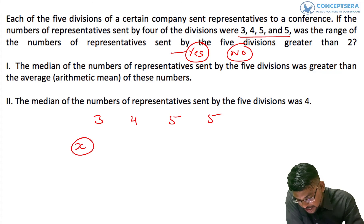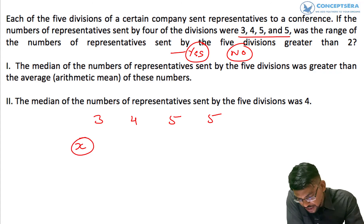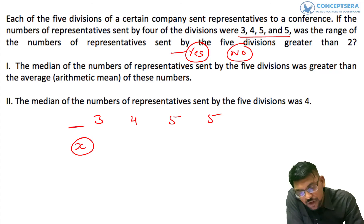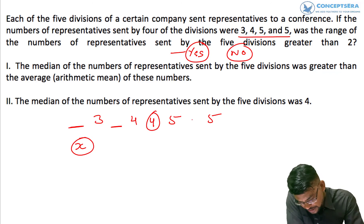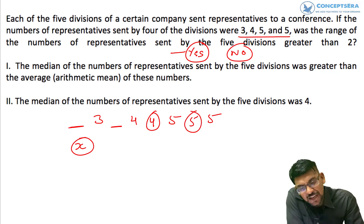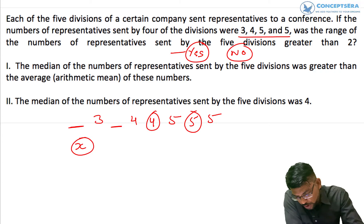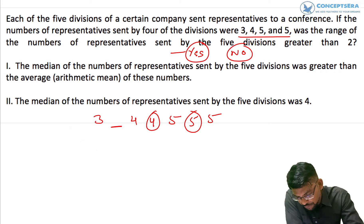When we arrange the numbers in ascending order, x can come at different positions — it could be at the lower end, in the middle, or equal to 4 or 5. These are all positive values, so we need to figure out the cases from here.